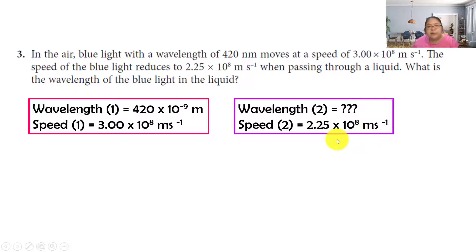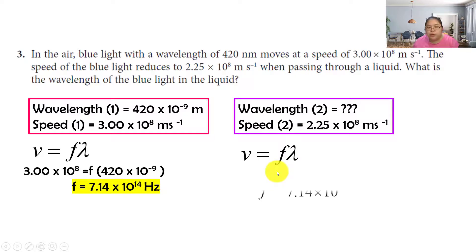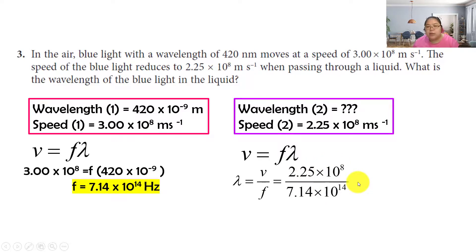Using the formula v = fλ, we first find the frequency: f = v₁ / λ₁ = 7.14 × 10¹⁴ Hz. Then applying to the second case: v₂ = f × λ₂, so λ₂ = v₂ / f = 2.25 × 10⁸ / 7.14 × 10¹⁴ = 315 nm (or in standard form, 315 × 10⁻⁹ m). That's the answer. That concludes topic 5.7, which is just one short topic. Hope you understand — thank you for watching.